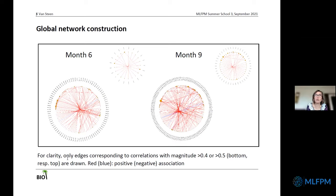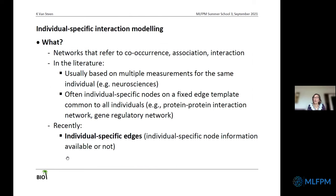This is how a global network may look at month six or month nine, reduced because otherwise you wouldn't see anything anymore — we made some reduction by having a threshold on the correlations. Typically in this field one takes 0.4 or 0.5. So far I have been talking about global networks — networks constructed by pooling lots of individuals together, with population-based weights.